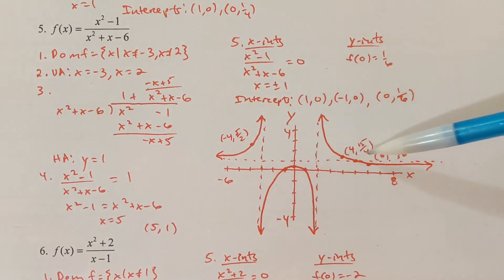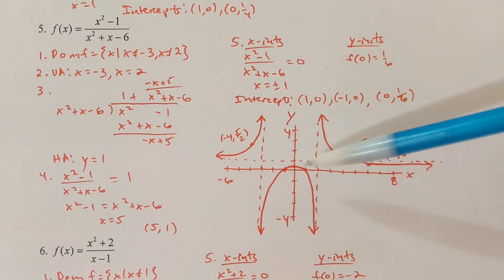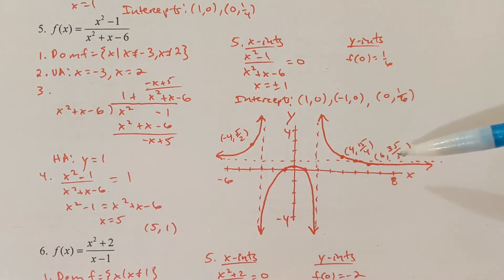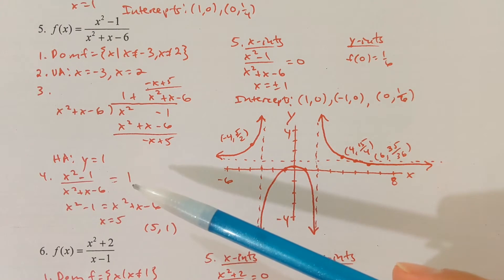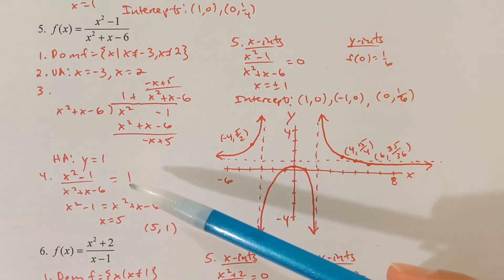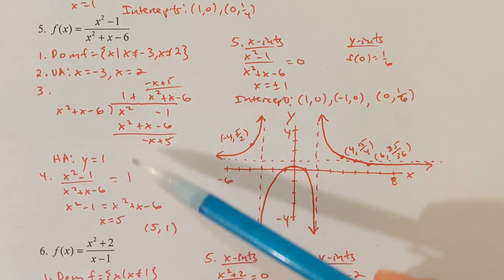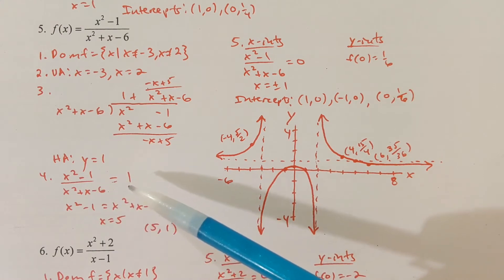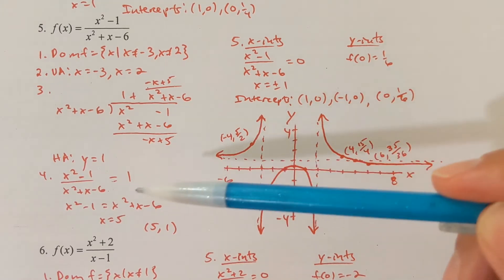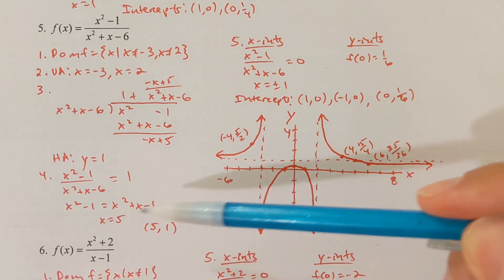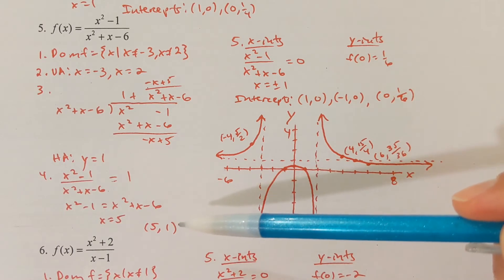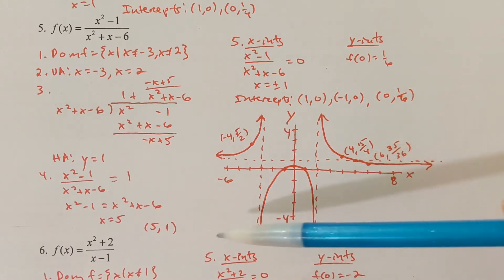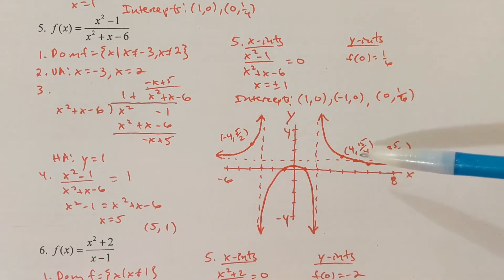I graph the three asymptotes: x equals 2, x equals negative 3, and y equals 1. To check if we cross the asymptote, set the function equal to 1, multiply both sides by x squared plus x minus 6, and subtract x squared from both sides, then add 6. We get x equals 5, so the graph crosses the asymptote at (5, 1) — just that one time.